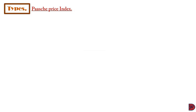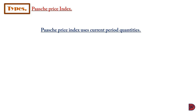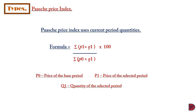The second is the Paasche price index. This index measures the change using the current period quantity. The formula is the summation of the selected price multiplied by the selected quantity, all divided by the summation of the base price multiplied by the selected quantity, all multiplied by 100.